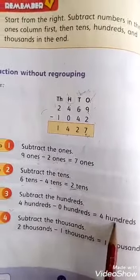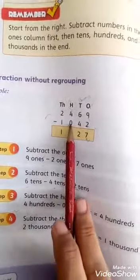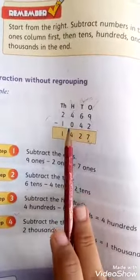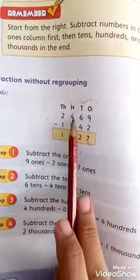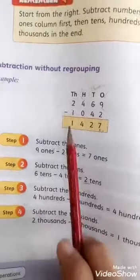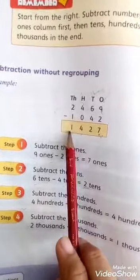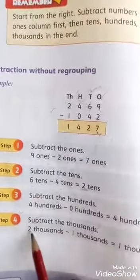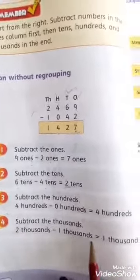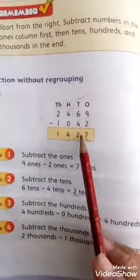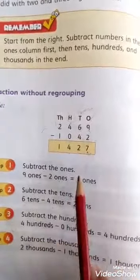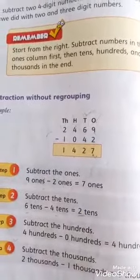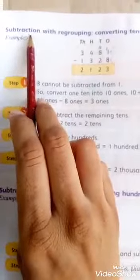You have to subtract 1500. Always remember that when you subtract 0 from any digit, you have to answer with the same digit. Now in step number 4, you have to subtract the thousands column: 2000 minus 1000 equals 1000. This is the subtraction without regrouping.